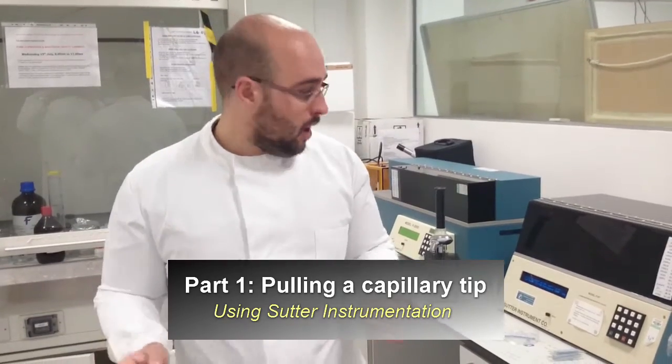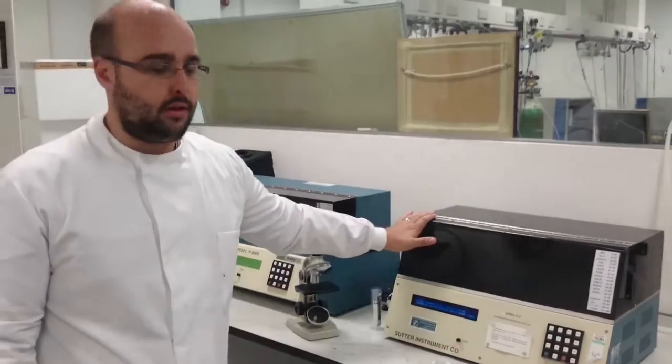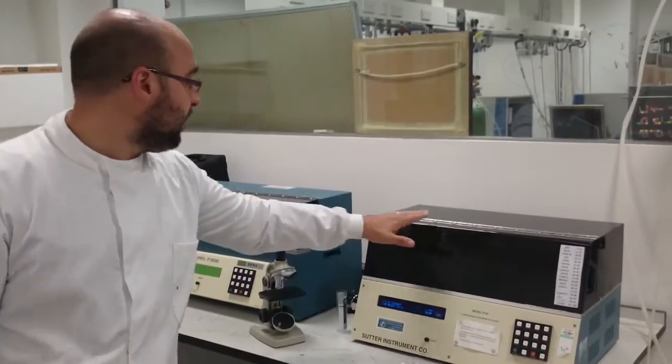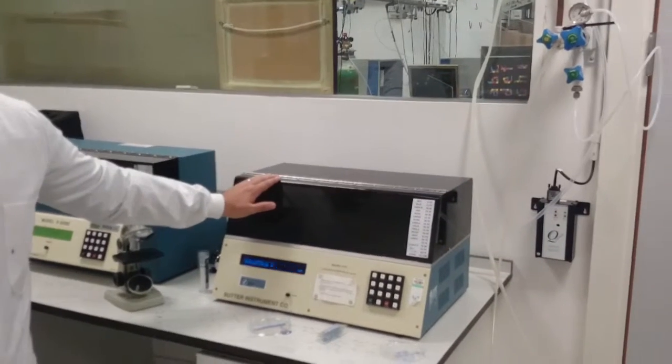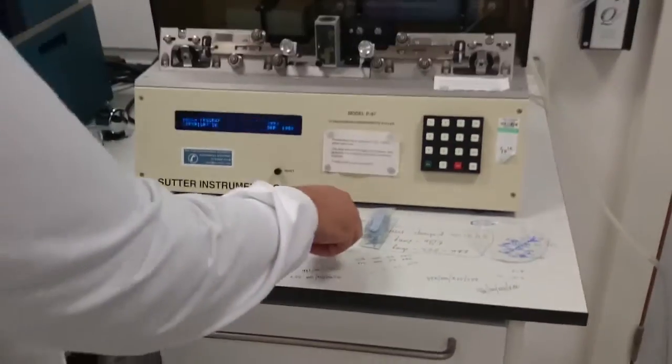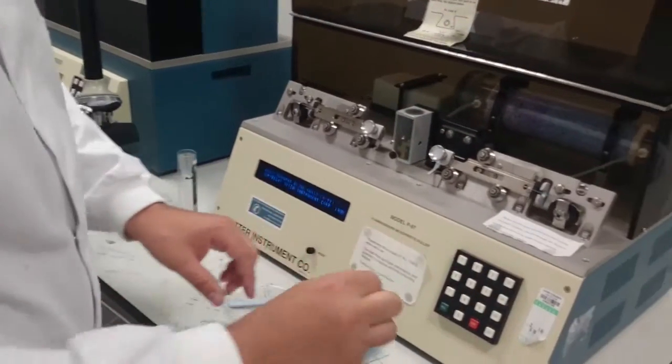I'm going to start off by showing you how to pull a borosilicate glass tip. We're going to be using the Sutter instrumentation, which is a common tip pulling source. Here we have both the filament and laser models, and I'm going to be showing you how to do it on the filament system. The borosilicate glass tip comes intact like this, and I'm going to pull it into two separate tips. We'll end up with a pulled glass tip like this.